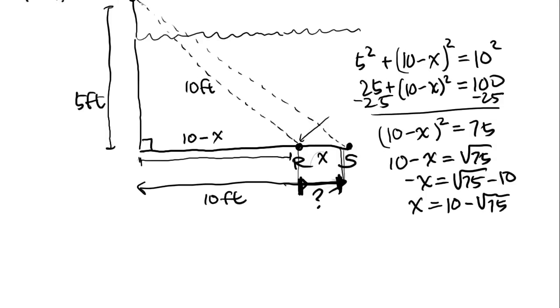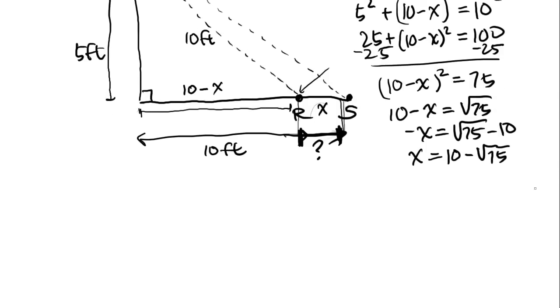Is that one of the answer choices? No, it is not. However, 10 minus 5 the square root of 3 is, and that's just, you know, 75 is 25 times 3, which is 5 and 5. So 10 minus 5 the square root of 3. So the answer is going to be A.